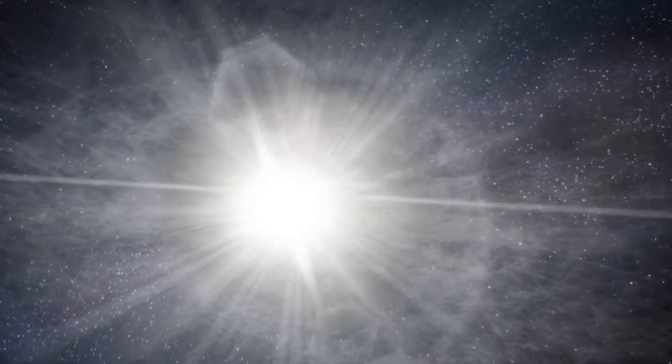Procyon B is a white dwarf, a remnant of a once more massive star, with a mass roughly 0.6 times that of the Sun and a very high surface temperature.